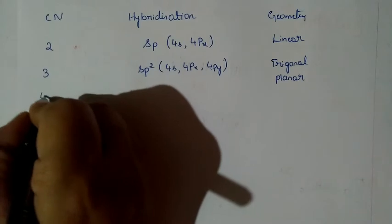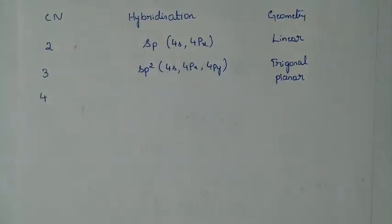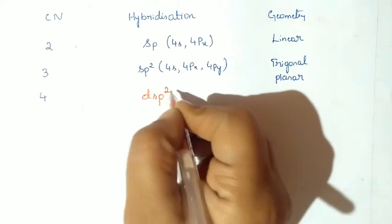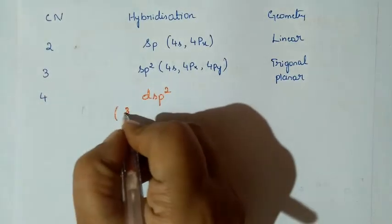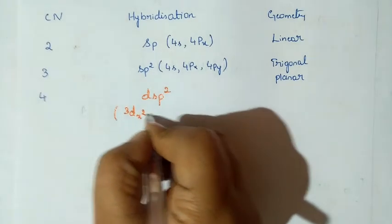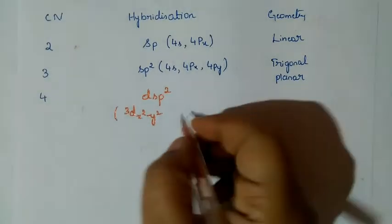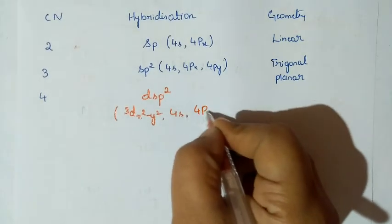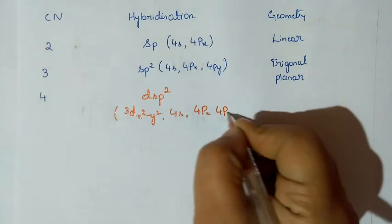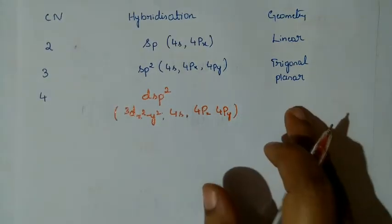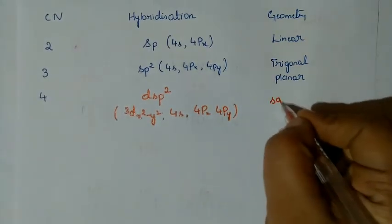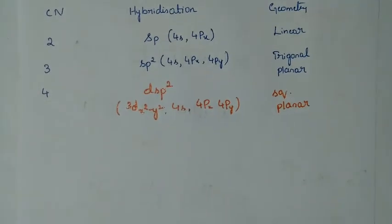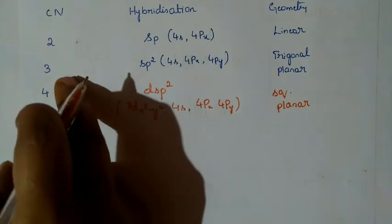If coordination number is 4, we come across DSP2 hybridization. Here we involve 3D x²−y², then 4S, 4PX, and 4PY. The geometry is square planar.